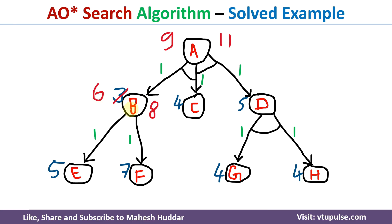Since we have modified the heuristic value of B, we need to modify the cost of A as well, because while calculating the cost of A we used the previous heuristic value of B. With the new heuristic value of 6, the cost becomes 1+6 = 7 for B's side, and 1+4 = 5 for C's side. So 7+5 = 12. The new cost of A for this path is 12. Comparing 12 and 11, 11 is now the better option.